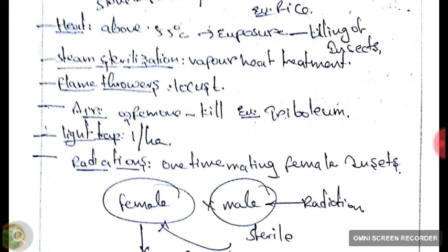Flamethrowers are used against locusts, which are groups of grasshoppers. These locusts attack fields and cannot easily be removed by chemical or other methods. We throw flames using a flamethrower instrument, and by fear of the flames, they leave the field. We can also remove oxygen from the field, which will kill insects.